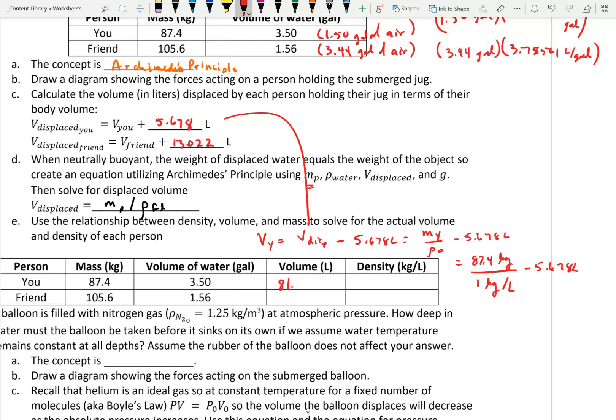How many sig figs do I have here? I only have three. So 81.7 is the correct sig figs. To get the density, I'll want to go at least one further. If I do the same calculation for my friend, they are going to have 105.6 divided by 1 kilogram per liter minus 13.022. That gives me 92.6 liters for the volume of my friend.